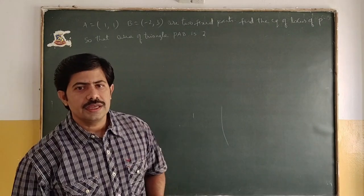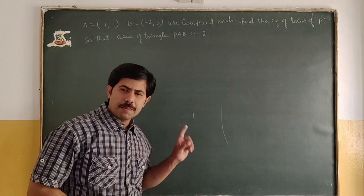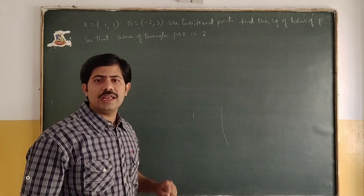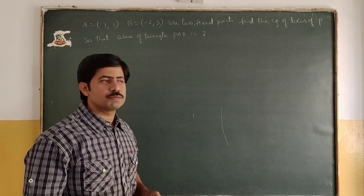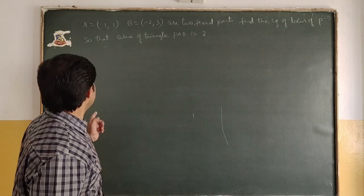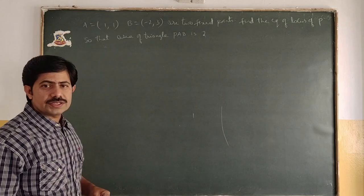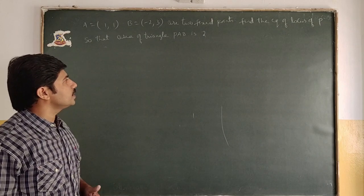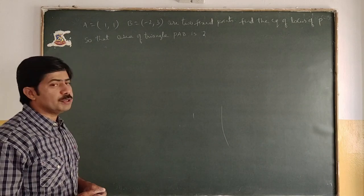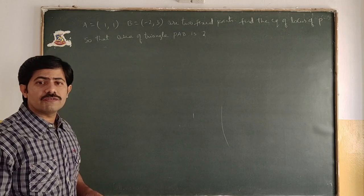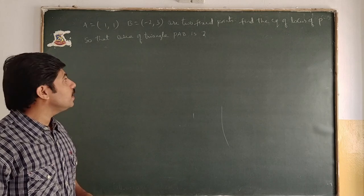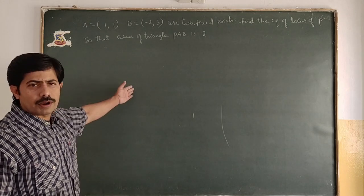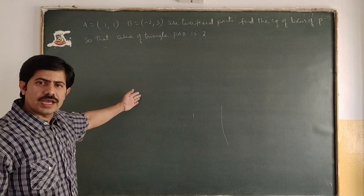This is the equation of locus. Now a similar problem: A(1,1), B(-2,3) are two fixed points. Find the equation of locus of P such that the area of triangle PAB is 2 square units. Please try this problem.